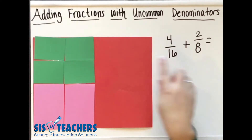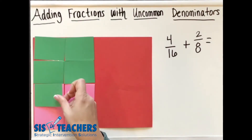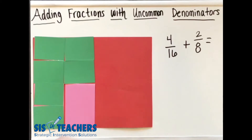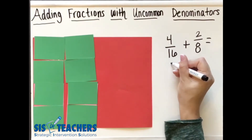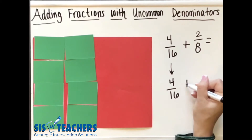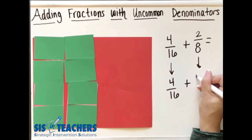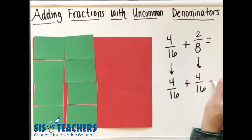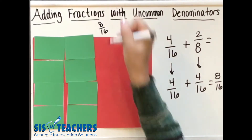Some of the students might have gone right away and said we need to change this and make it into sixteenths. So in essence, what did we do? We took the four sixteenths and left it the same, but our two eighths we ended up changing into an equivalent fraction of four sixteenths. Four sixteenths plus four sixteenths — therefore the answer somebody got in our class was eight sixteenths. We're going to write that up here as an option.